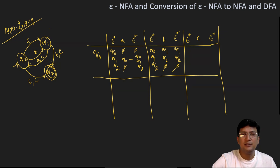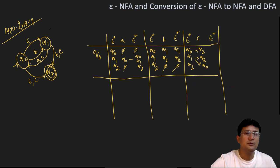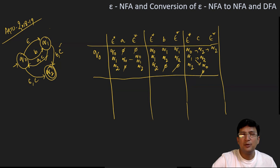Now for the transition with symbol 'c': epsilon closure of q0 is {q0, q1, q2}. On getting symbol 'c', q0 moves to q2, and q1 moves to q2. Also on 'c', q1 can move to q0 as well. q2 on getting 'c' is undefined. So taking the epsilon closure of q2, which is {q2} only, and epsilon closure of q0 is {q0, q1, q2}.